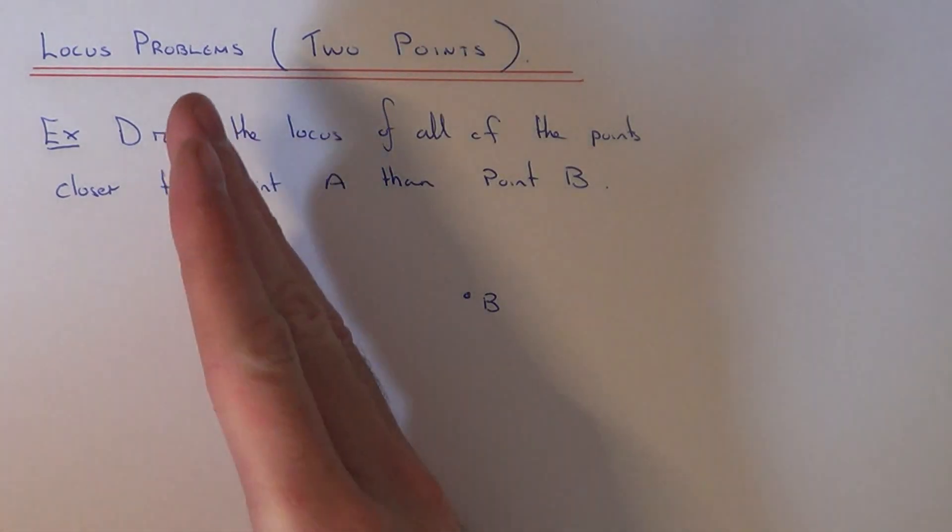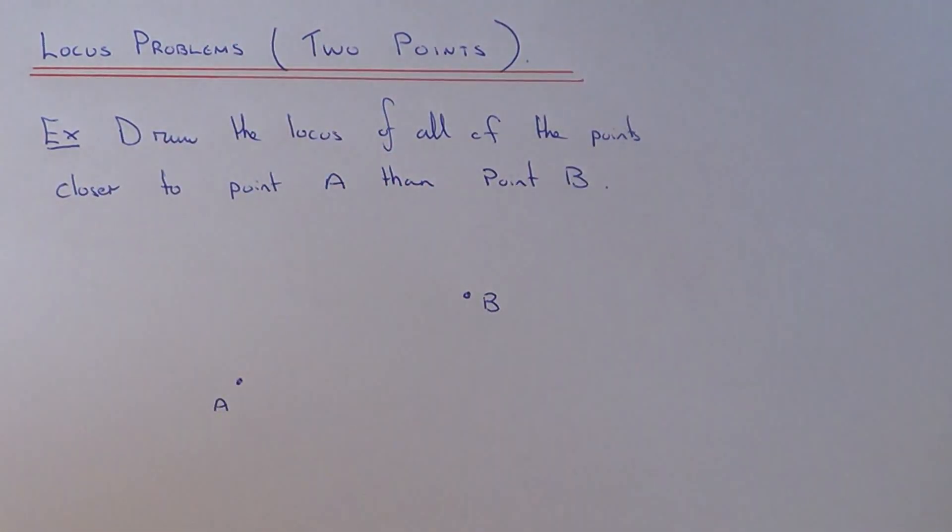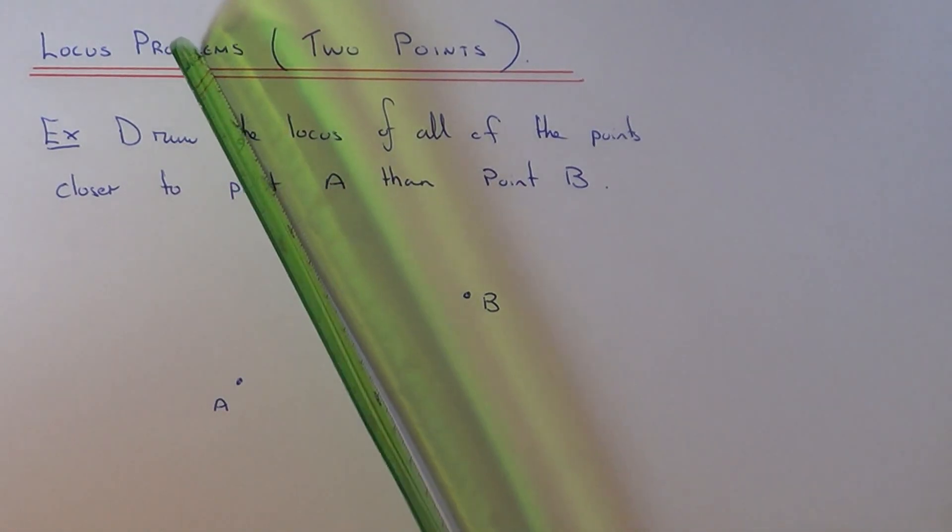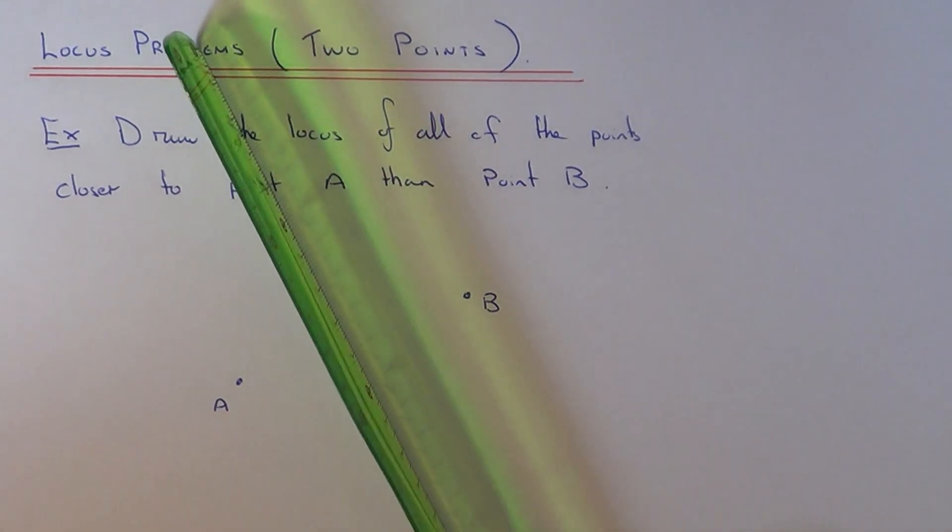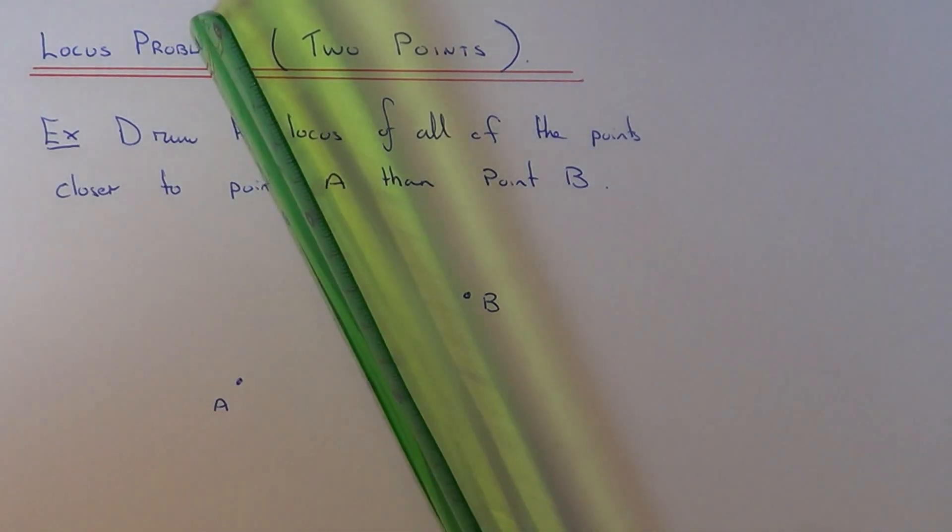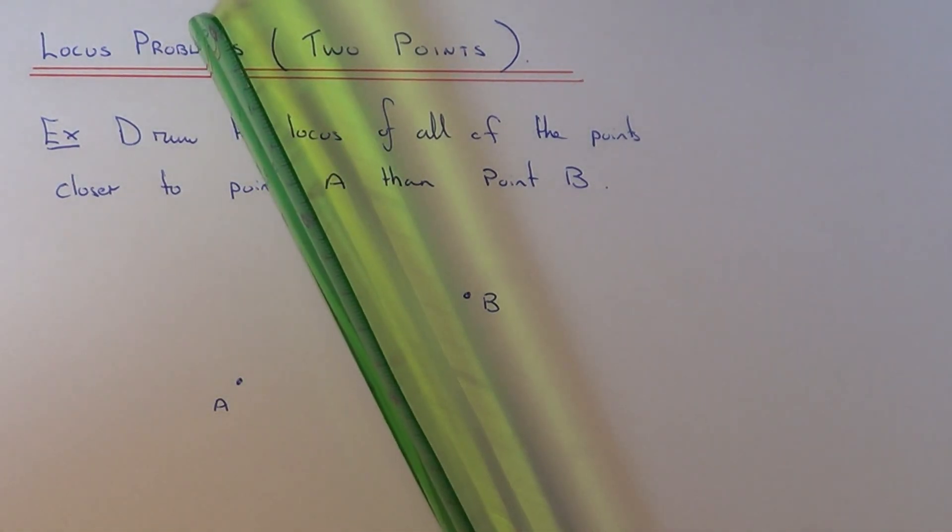So we need all the points nearer to A than B. What we need to do is try and get the line which goes to the middle of the two points A and B, and if you know how to do the line bisector, this will be pretty straightforward.